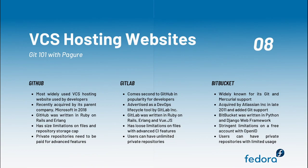And lastly, we have Bitbucket, which stands out from the list as it is the only VCS hosting website with support for both Git and Mercurial. Acquired by Atlassian in late 2011, the Git support was further flourished. Bitbucket is entirely written in Python with some parts built on the Django web framework, but has stringent limitations on a free account with OpenID. Like GitHub, private repositories in Bitbucket also have limited features if you do not pay.